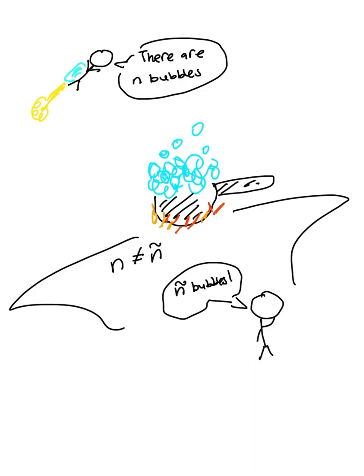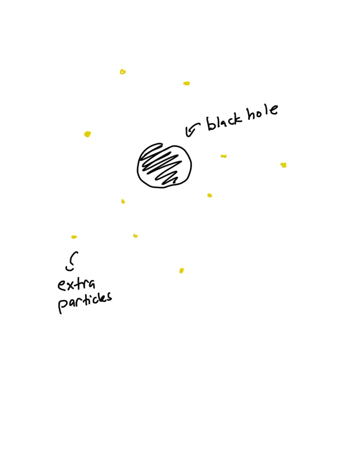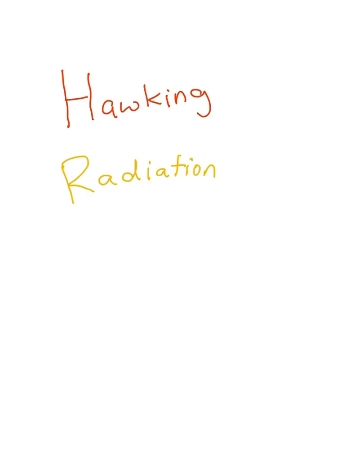An observer in flat space may see zero, while an observer in curved space sees 10. The extra particles that the observer in curved space sees is called, drum roll, Hawking radiation.